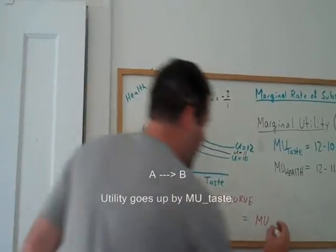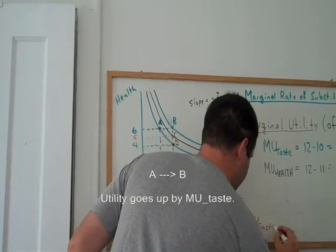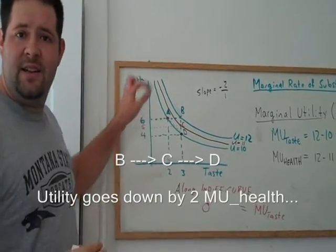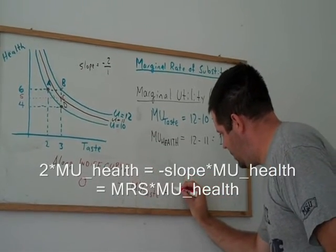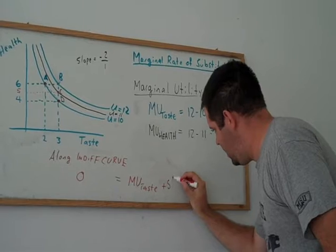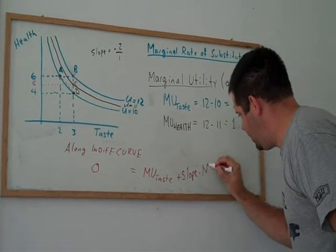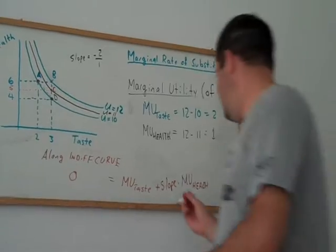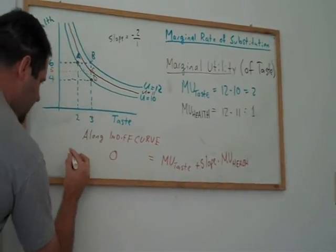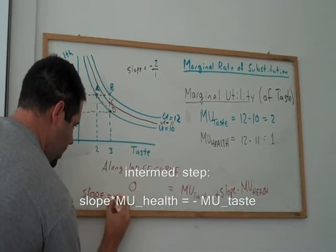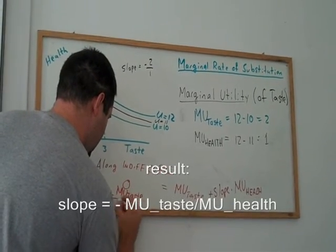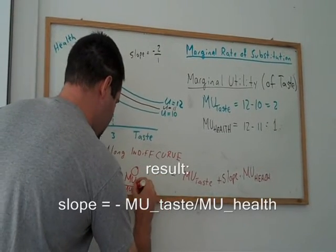Now, we can also go from point A to point B to point C to point D. So, how about we try that? It goes up by the marginal utility of taste. We can go from point B to point C and point C to point D. But you'll notice that that is the slope times the marginal utility of health. You can go ahead and solve for the slope. You can do your algebra and everything. And the slope will equal negative marginal utility of taste over marginal utility of health.